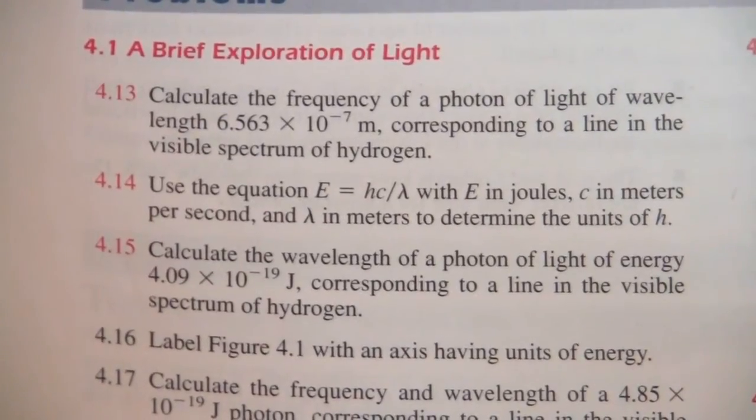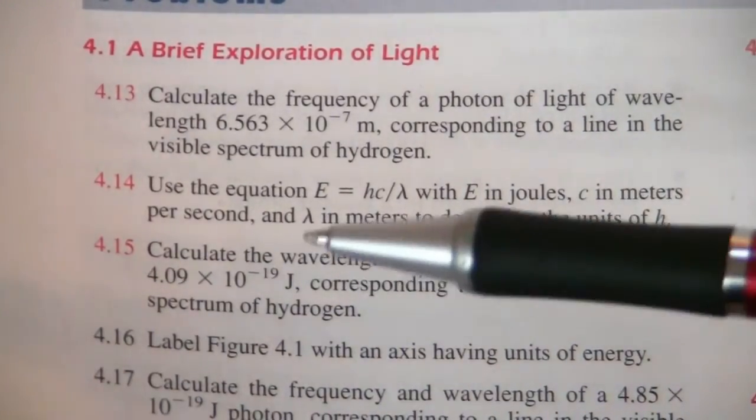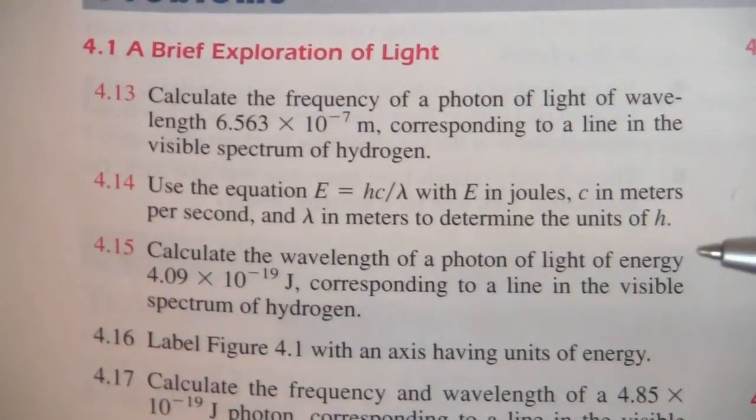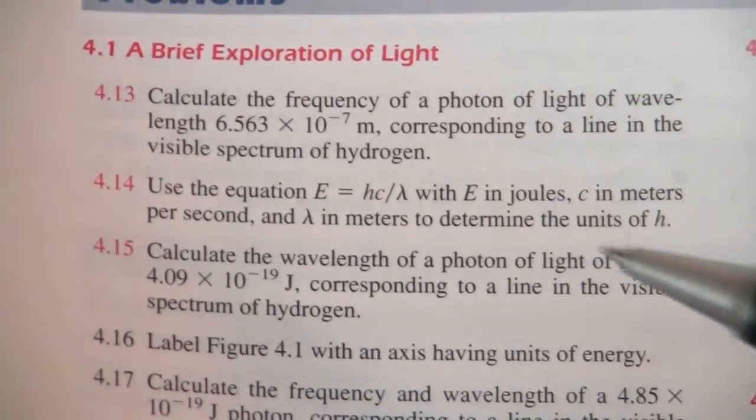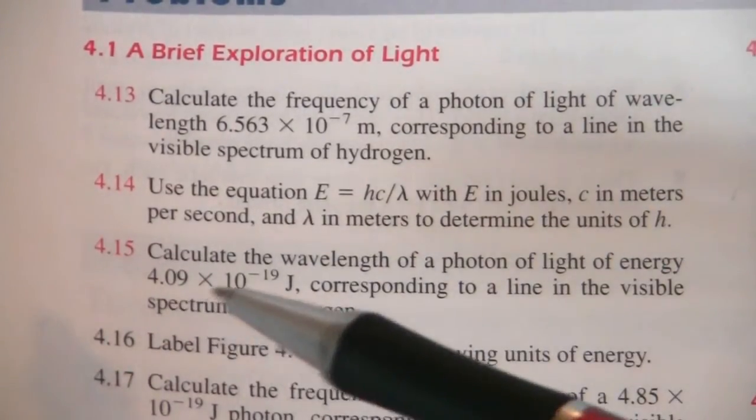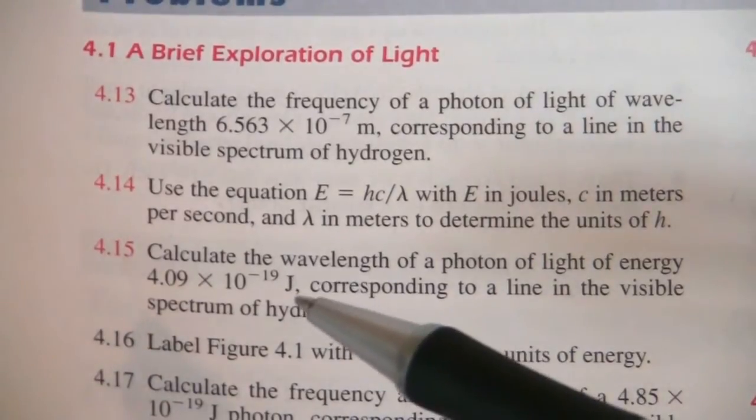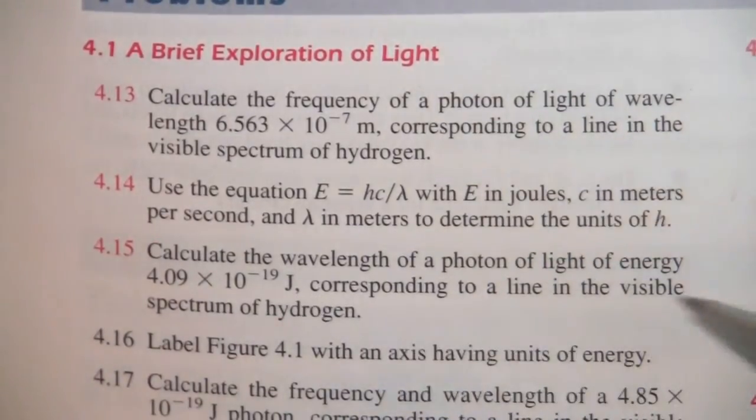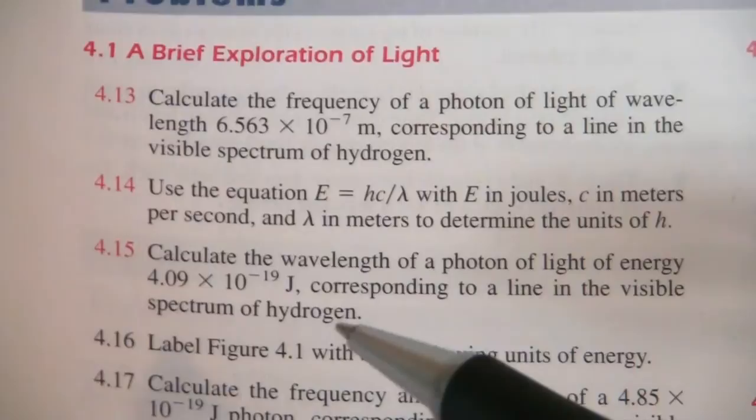Alright, here's a question that says to calculate the wavelength of a photon of light of energy 4.09 times 10 to the minus 19th joules, corresponding to a light in the visible spectrum of hydrogen.